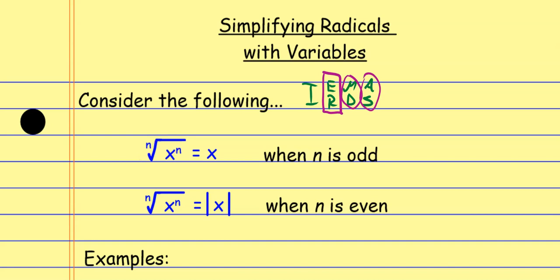But what's strange is that sometimes we slap absolute value around the x value. The difference is this: if n is odd, we don't have to worry about it. But if n is an even value — if we're talking about an even root — then we have to use absolute value. We only need to do that if the value we get at the end is not going to be positive all on its own.